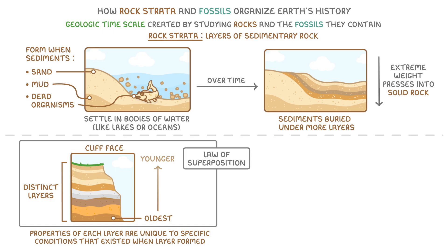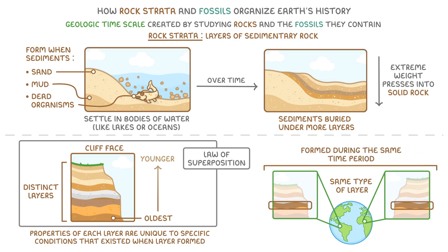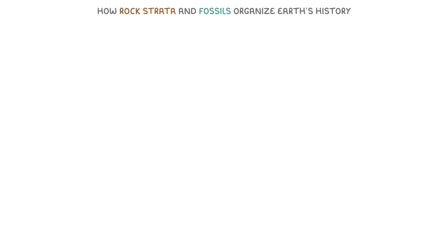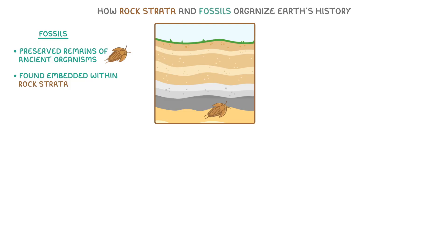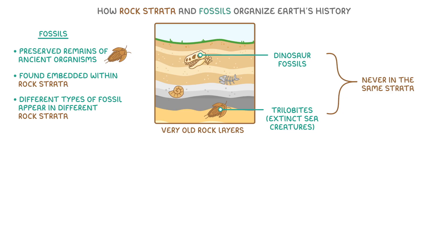The properties of each layer are unique to the specific conditions that existed when that layer formed. Scientists can examine rock layers across different locations, and if they find the same type of layer in different places, they know those layers formed during the same time period, even if they are now hundreds of miles apart. Fossils, on the other hand, are the preserved remains of ancient organisms that can be found embedded within some rock strata. Importantly, different types of fossils appear in different rock strata. For example, you'll find fossils of trilobites — which are extinct ancient sea creatures — in very old rock layers, but never in the same strata as dinosaur fossils, because trilobites lived hundreds of millions of years before dinosaurs ever existed.